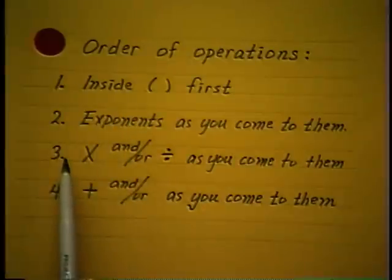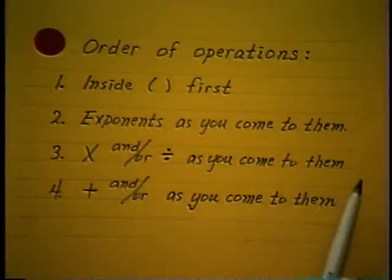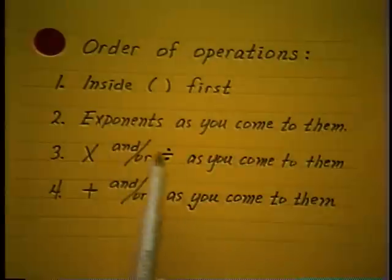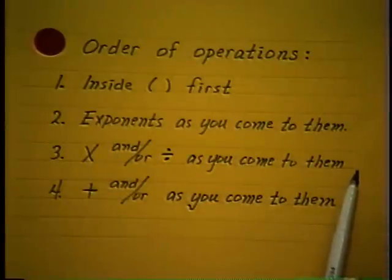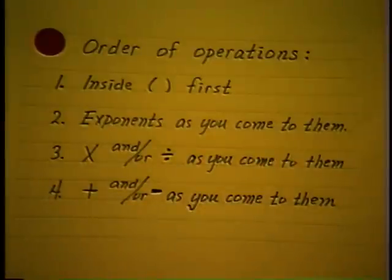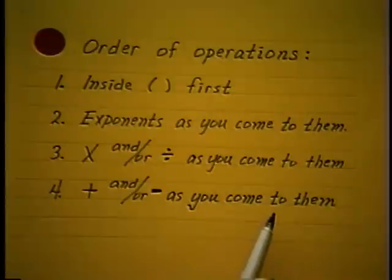Then you go back to the beginning and do the multiplications and/or divisions as you come to them. Make special note: you don't do the multiplications first and then the division — you do whichever of these two comes first, from beginning to end. Then back to the beginning and do the additions and/or subtractions as you come to them, front to back. If you come to a subtraction first, do it first; addition first, do it first.